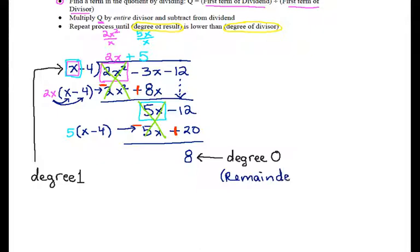And then I find my quotient, also up here in the top. And I write my answer in the form quotient 2x plus 5 plus remainder 8 over divisor x minus 4.